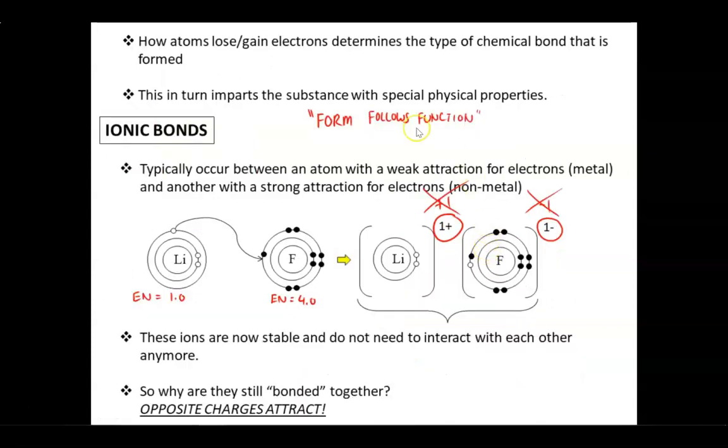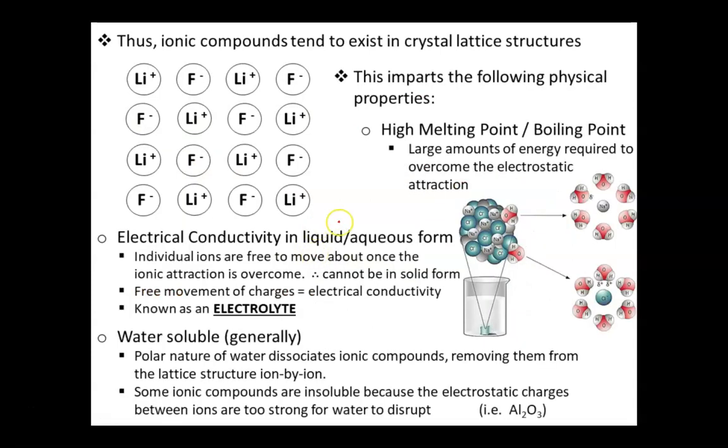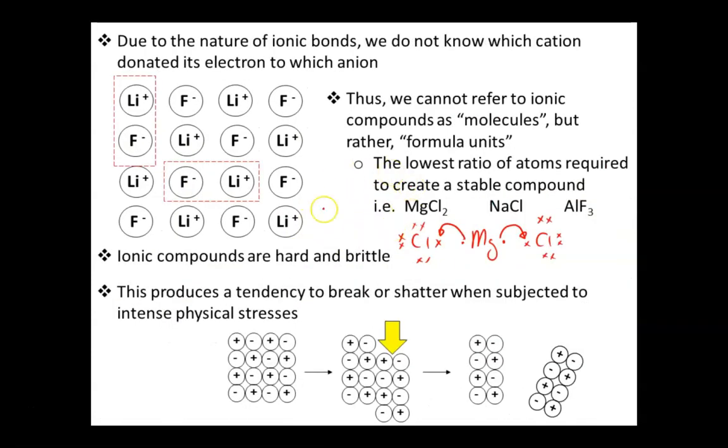So, as you can see, form follows function. By transferring electrons from one atom to another, we form ions. These ions are then electrostatically attracted to each other, creating an ionic bond. And compounds formed from these ionic bonds have very unique physical properties.